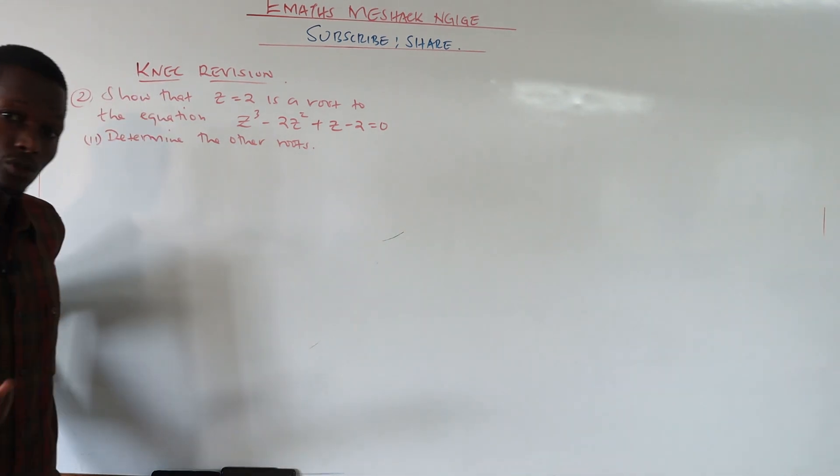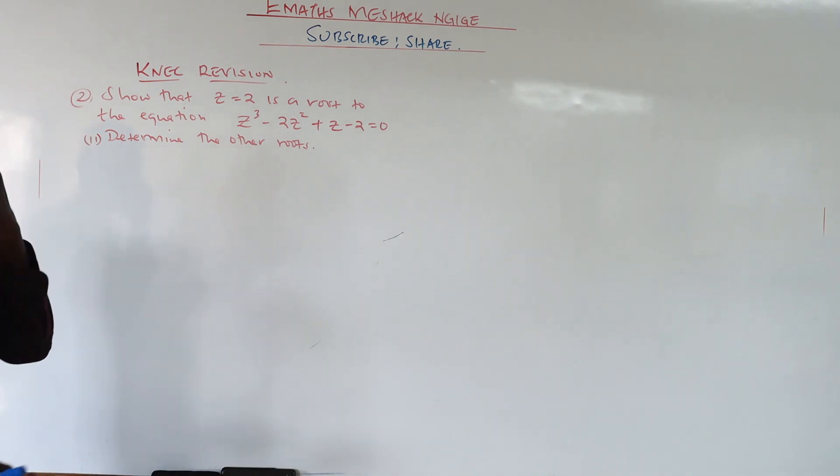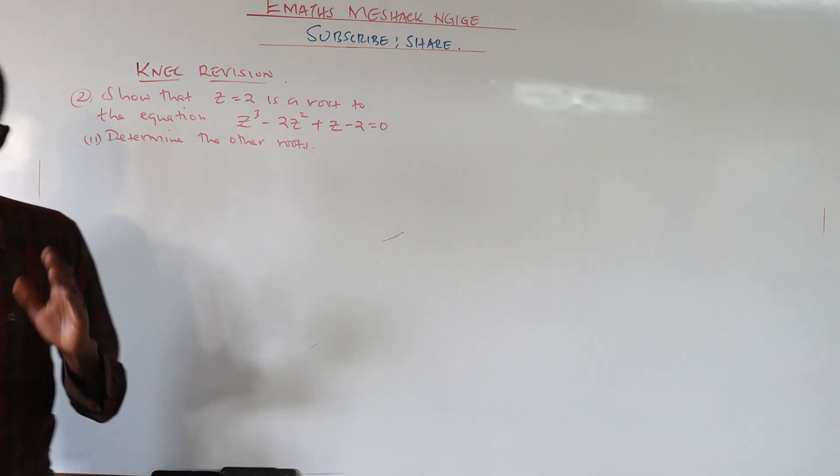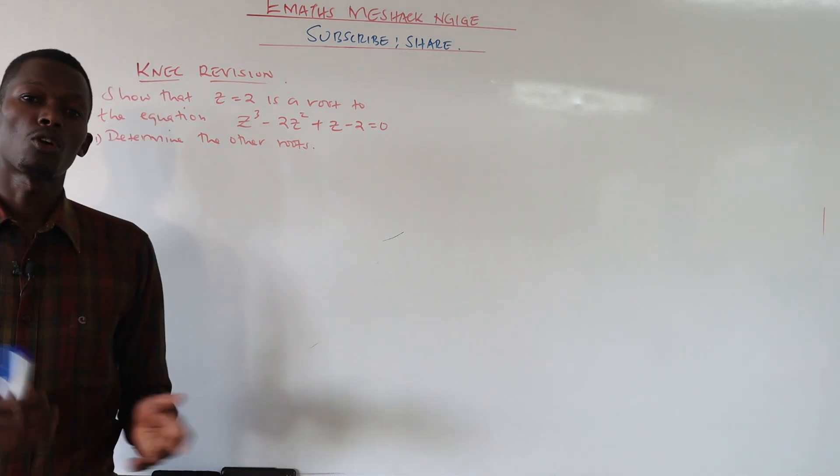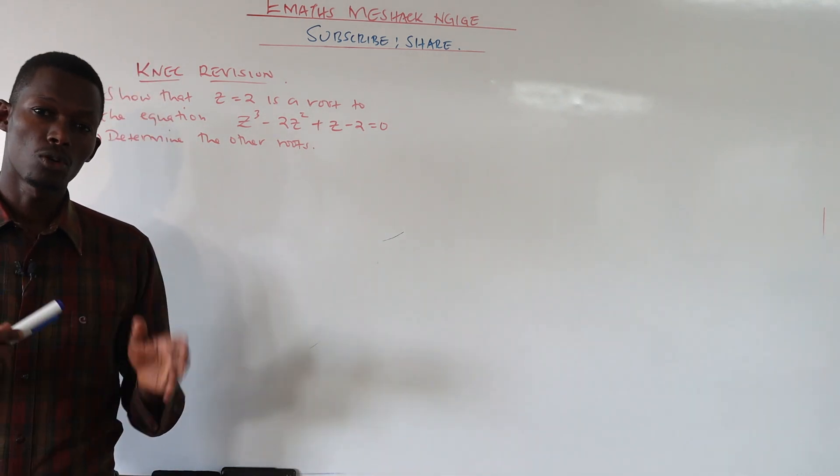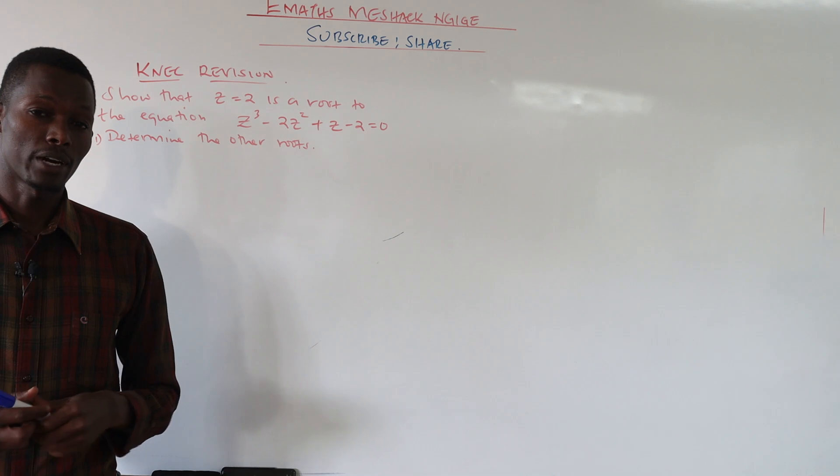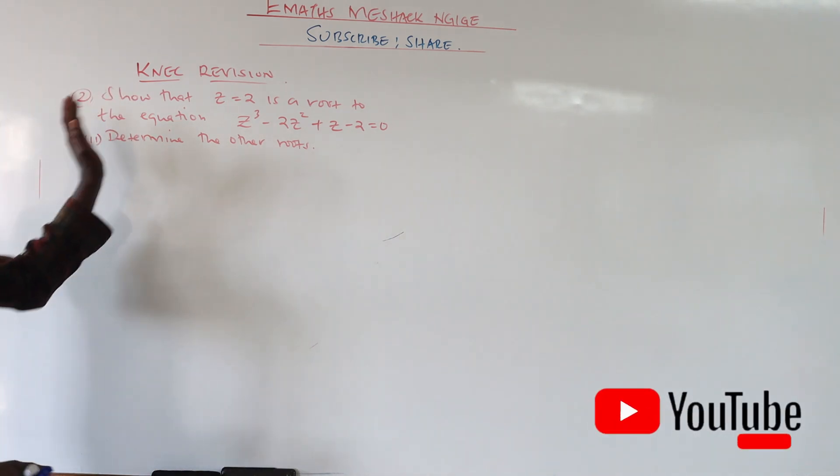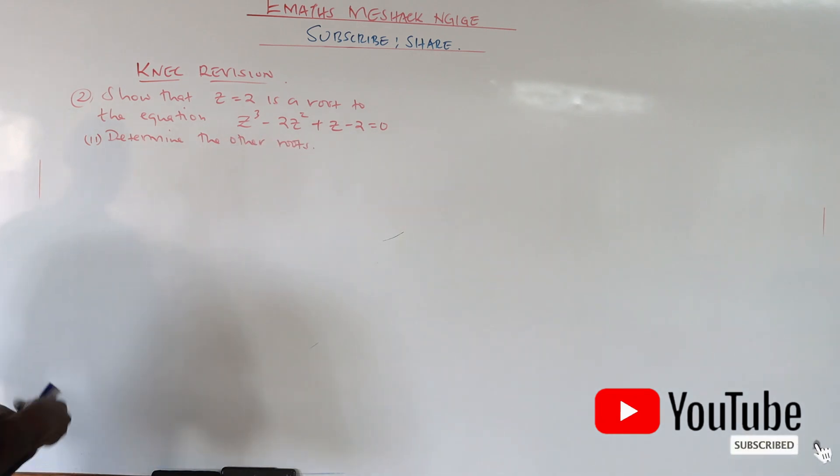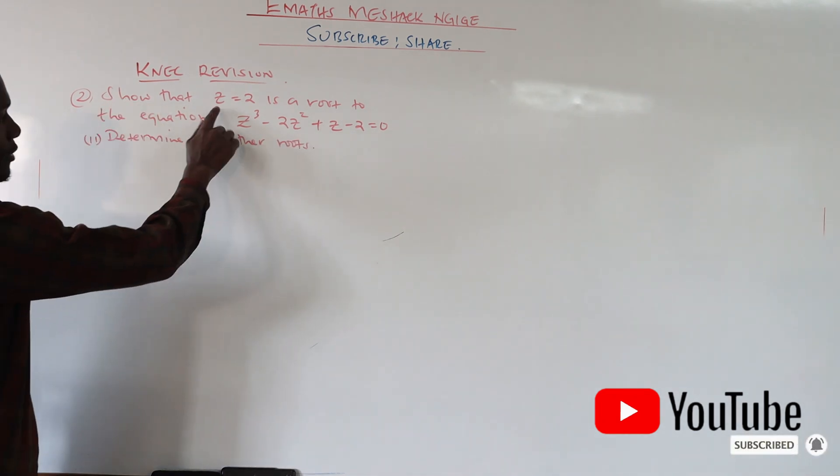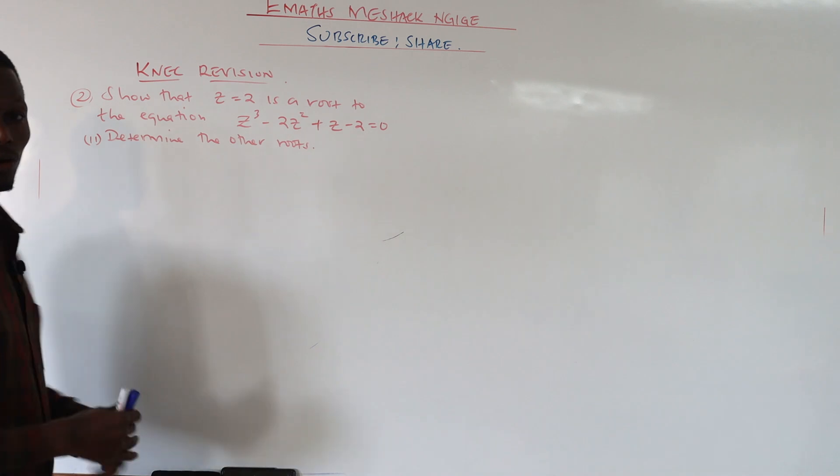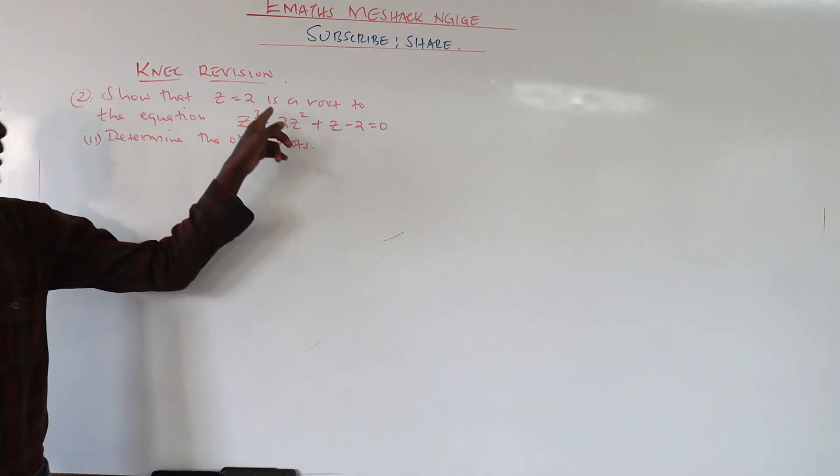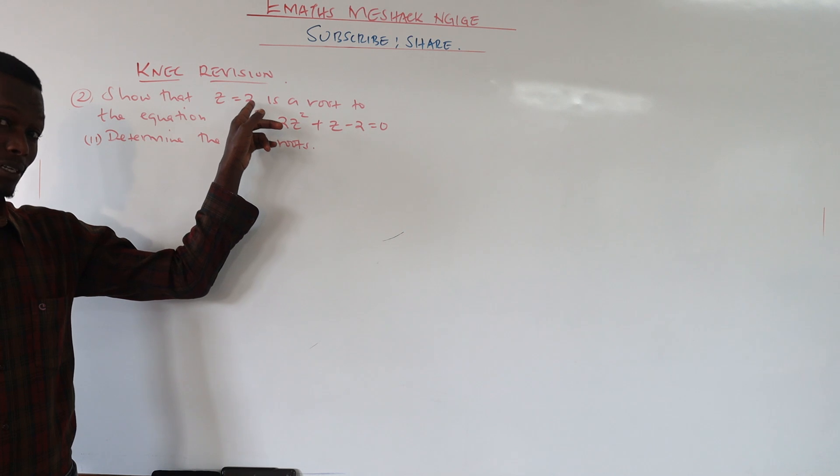In the previous question that we solved, one thing you need to remember is that complex numbers will always occur in pairs. If you have a complex number you must have its conjugate. But this is a special question because if you look at your complex number z, it only has a real part.